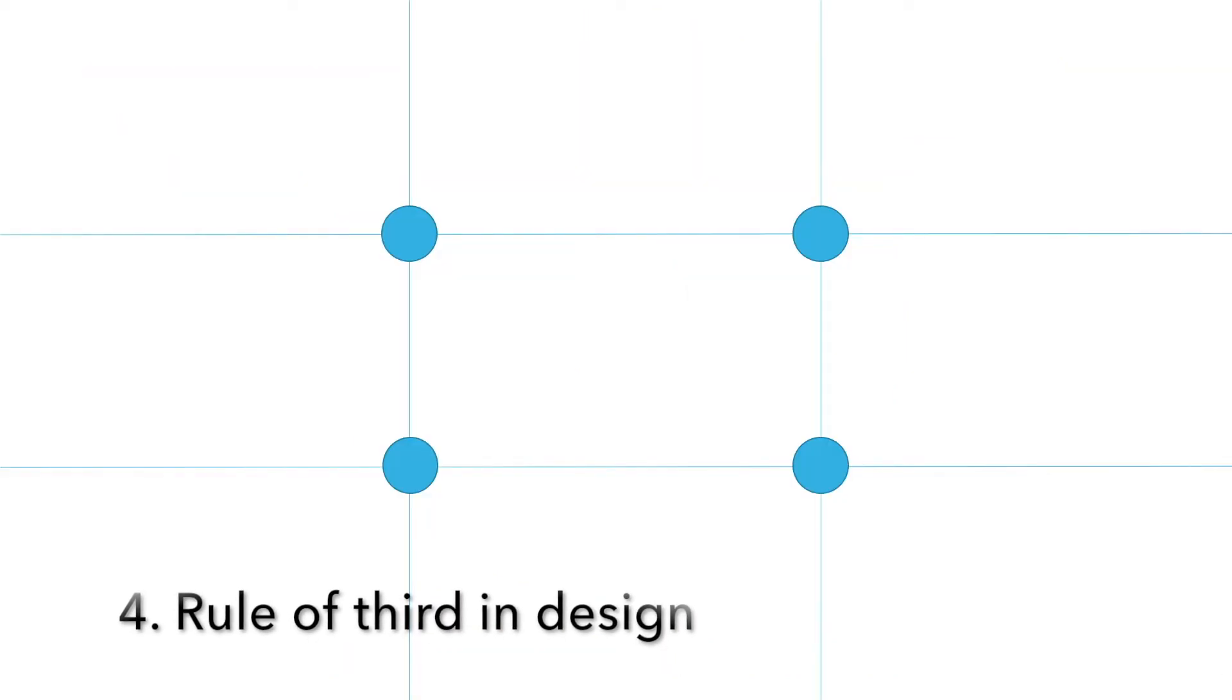Let's move into rule of thirds. Basically, you divide your screen into three equal portions and this helps you arrange your presentation. In photography, if you put your main object that you want to focus on in one of the four circles, you have better focus and better ratio of the object to the foreground and background.